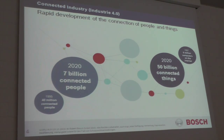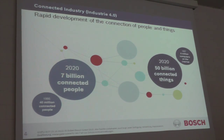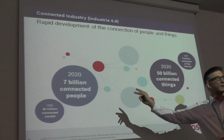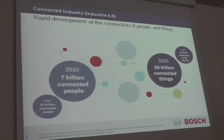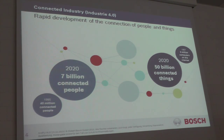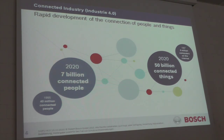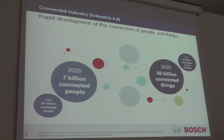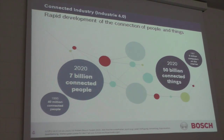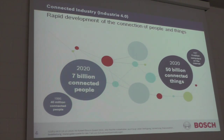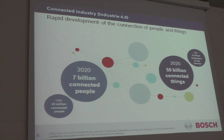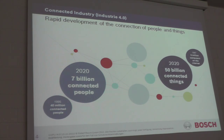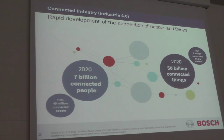First, I would like to mention the so-called Internet of Things and Services. I have pointed out two key figures. The first is the number of connected people worldwide — in 1995 there were 40 million connected people, and our estimations see 7 billion connected people for 2020. In 1997 we had 6 million computers on the Internet; in 2020 we see estimations of 50 billion connected things.